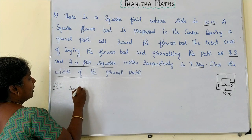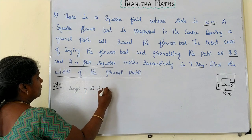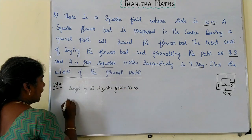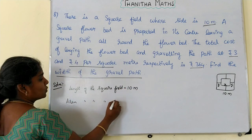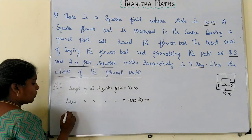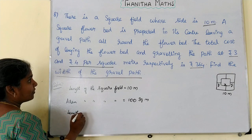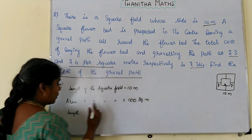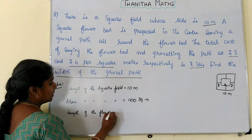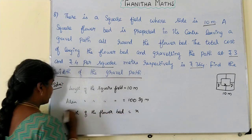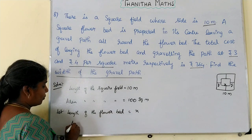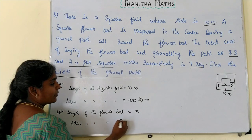The total area of the field is 100 square meters. Let the length of the flower bed be x. So the area of the flower bed is x squared.